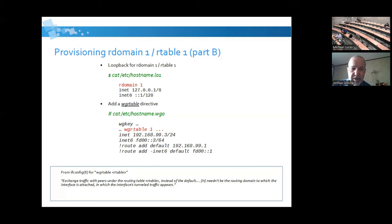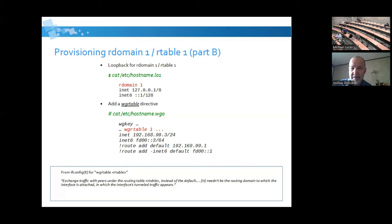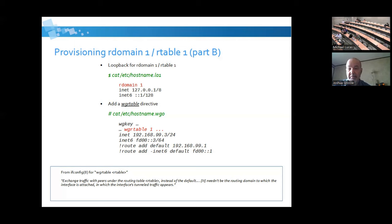In the WireGuard configuration I added something called 'wgrtable' — this is the secret sauce. It allows me to say that, regardless of the domain assigned to my WireGuard network interface, the routing table I'm going to use for physical communication is a different one. This is how I tunnel the VPN through the physical domain.